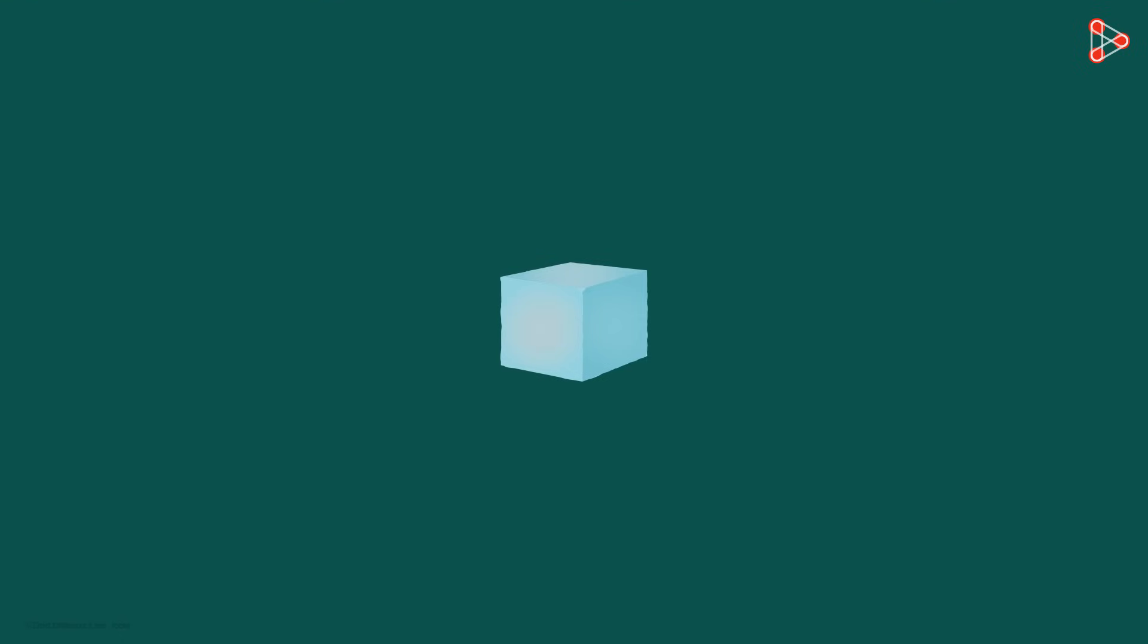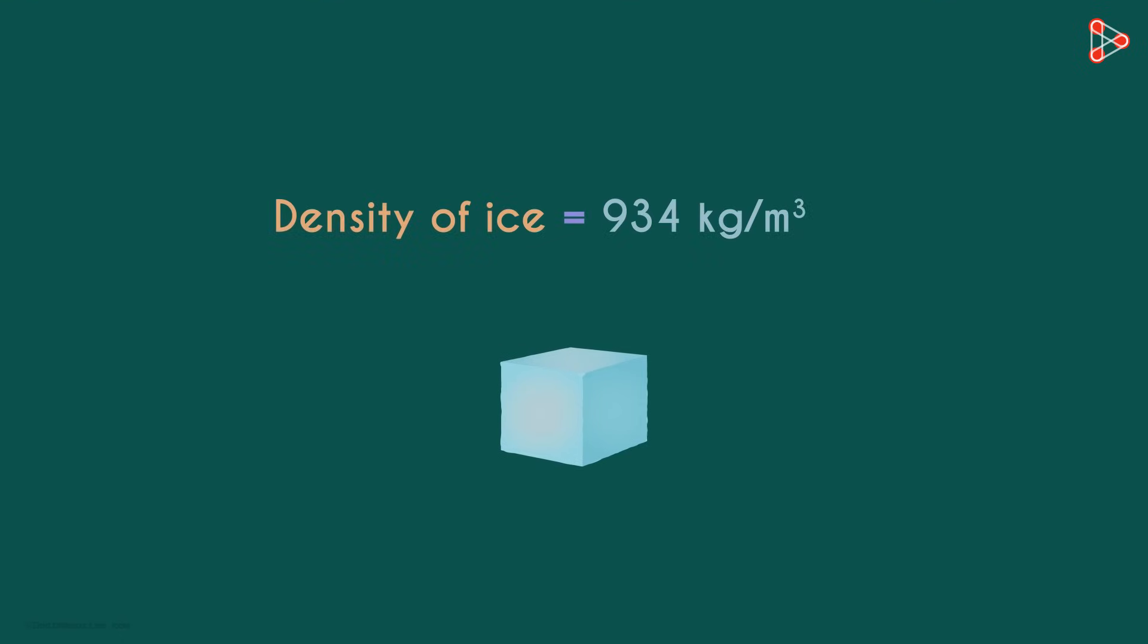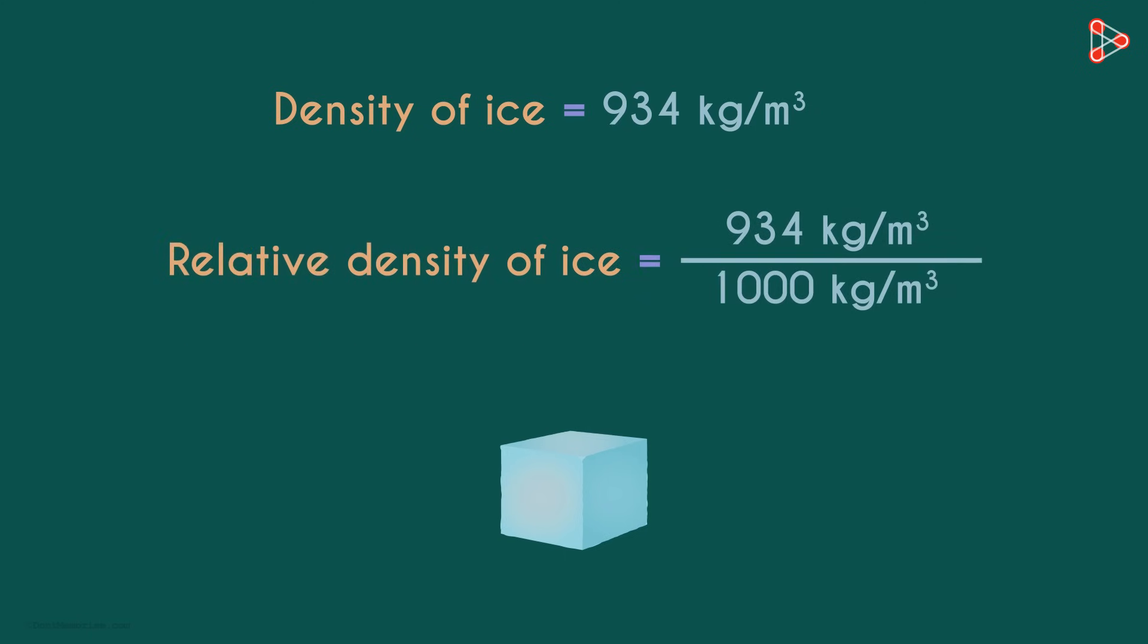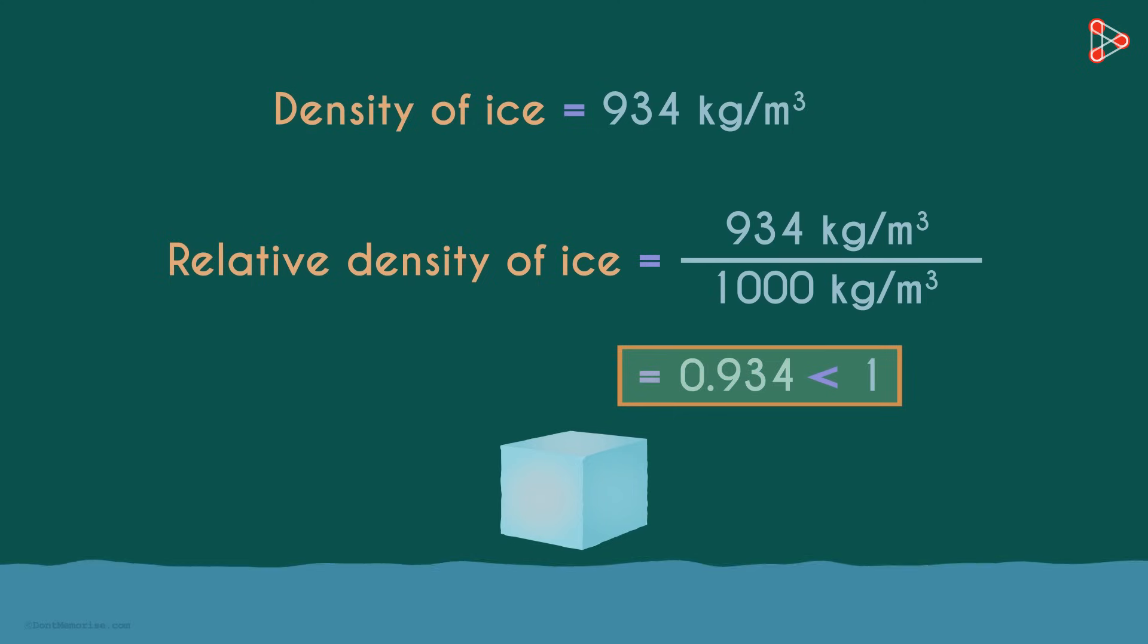But if we take the example of ice, its density is approximately 934 kilograms per meter cubed. So its relative density will be 0.934. As its relative density is lesser than 1, it will float in water.